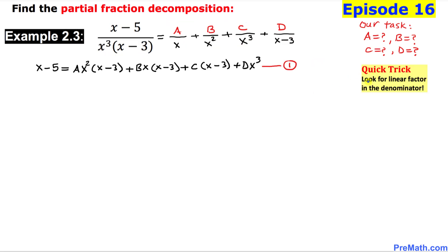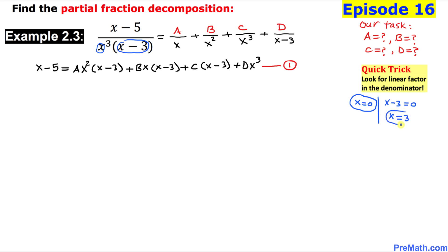Here is a quick trick: look for linear factors in the denominator. We have x and x minus 3 as the two linear factors. Setting each equal to zero gives us x equals 0 and x equals 3 as our two key values.